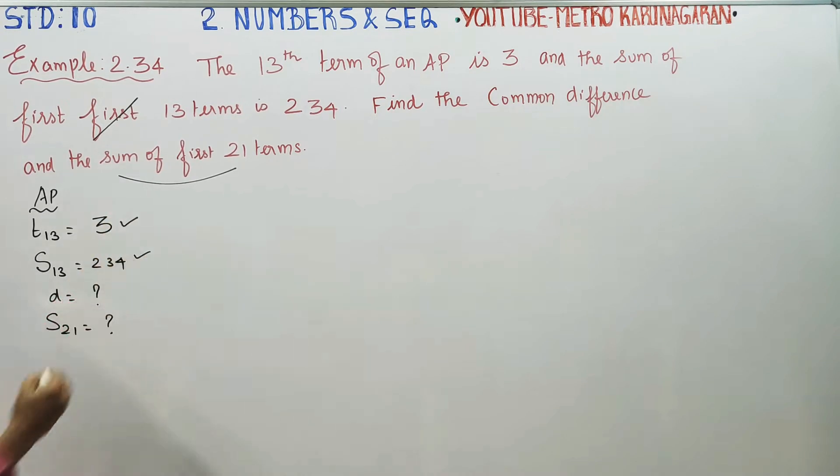The TN formula is: A plus N minus 1 into D equals TN.